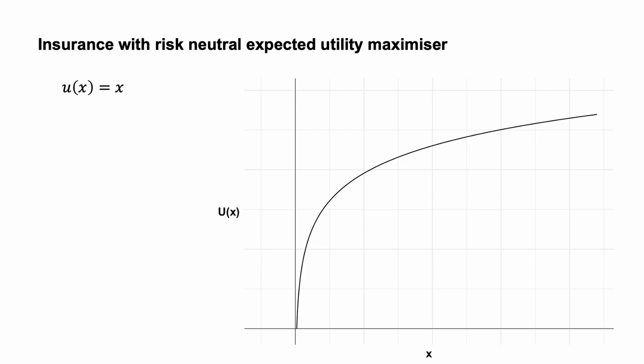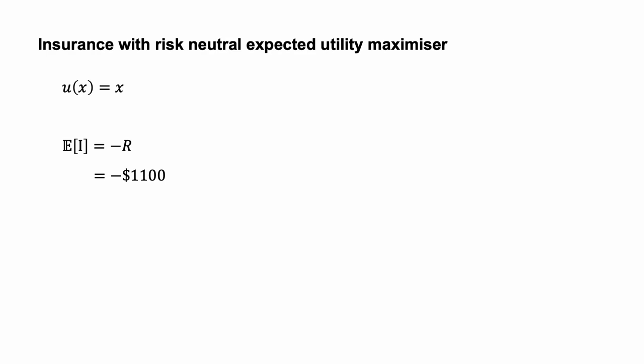The first question I will consider is whether a risk-neutral person would purchase the insurance. A risk-neutral utility function is U of X equals X. A risk-neutral agent will choose the option with the highest expected value. If the agent purchases insurance, they pay the premium and do not suffer any loss regardless of whether there is a bushfire or not. Therefore, the expected value of purchasing insurance is the loss of the premium: E of I equals negative R, which equals minus $1,100.